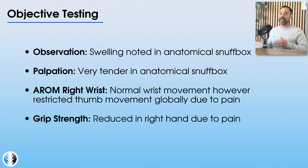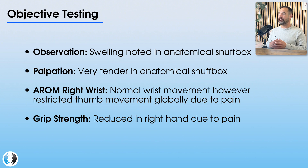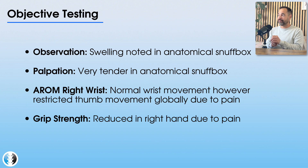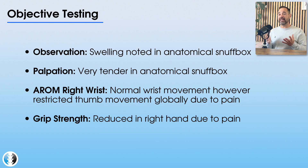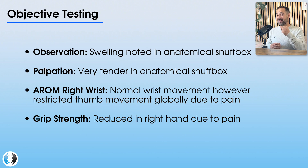We then assess the patient objectively, and the first thing we notice is that it's really painful to palpate in the region of the anatomical snuffbox, and it's also very swollen in this area — in the small depression on the posterior or dorsal side of the thumb. Looking at her wrist active range of movement, any movement of her thumb recreates her symptoms and seems really painful. She also has reduced grip strength in her right hand, because whenever she tries to grip anything, she immediately gets a reproduction of this pain at the base of her thumb.